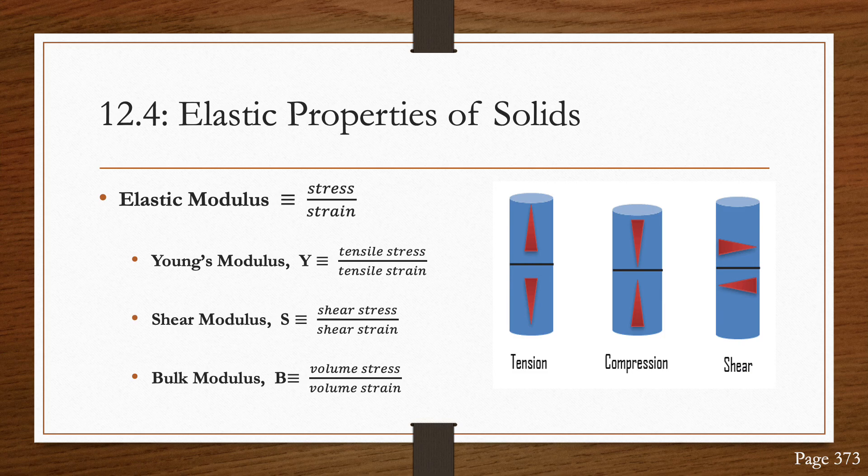Of course, there are many different types of deformation, but we're only going to be discussing three of them. Young's modulus measures the resistance of a solid to a change in its length, which is also known as tension or tensile.